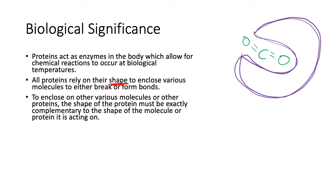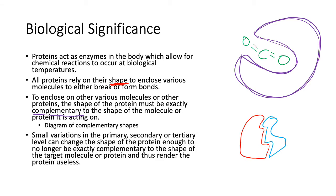To enclose on other various molecules or proteins, the shape of the protein must be exactly complementary, which just means that it fits around the other thing—the shape of the molecule or protein that it's acting on. Complementary shapes: this has a complementary shape of this, because they have to get really close to each other. Complementary shapes.